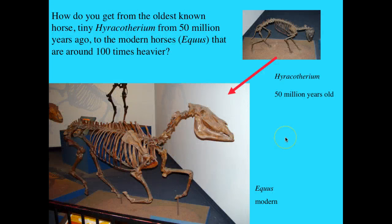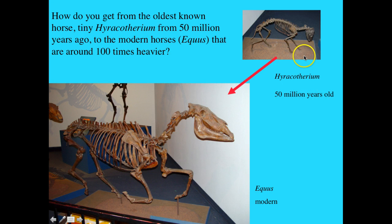Another very famous example is that of the horses. Hyracotherium was about the size of a collie, and modern Equus is the size of a horse. So how did it grow about 20% larger and about 100 times heavier in 50 million years? The answer is that it did so slowly and gradually.